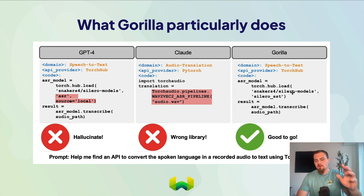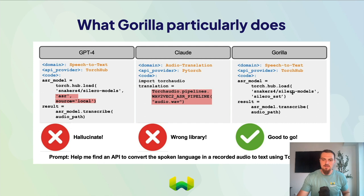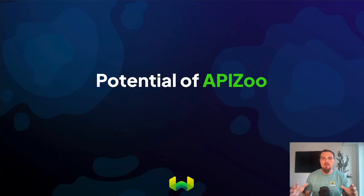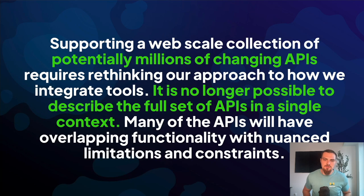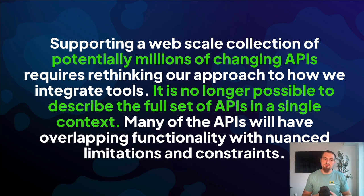This is the first work of Gorilla — learning to call model inferences. There's another paper called HuggingGPT, where you think of pre-trained models as the API zoo and collection of tools a large language model can use. But the authors are collecting this API zoo dataset on their GitHub, and I think this is extremely powerful. Supporting web-scale collection of potentially millions of changing APIs requires rethinking how we integrate tools — it's no longer possible to describe the full set of APIs in a single context.